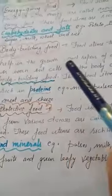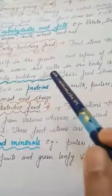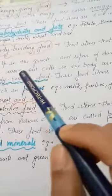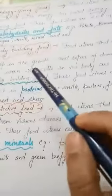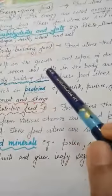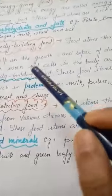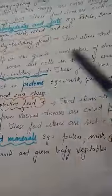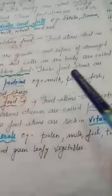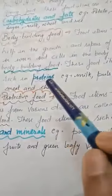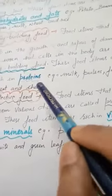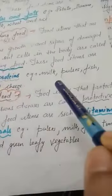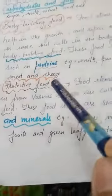Second is body building food. Food items that help in the growth and repair of damaged or worn-out cells in the body are called body building food. Worn-out cells means old or damaged cells. These food items are rich in protein. Examples include milk, pulses, fish, meat, and cheese.